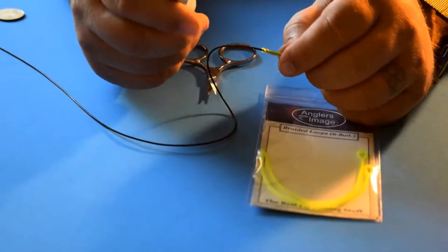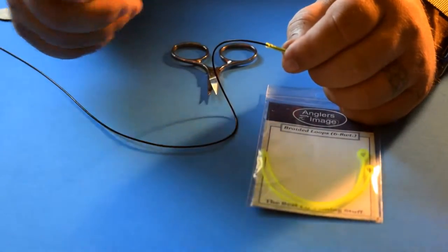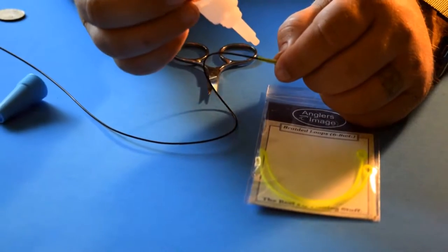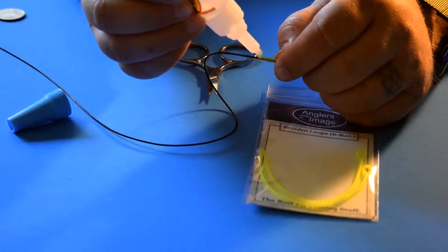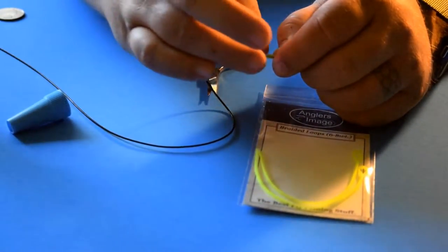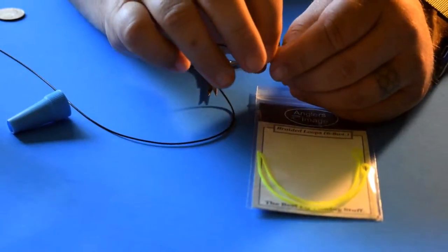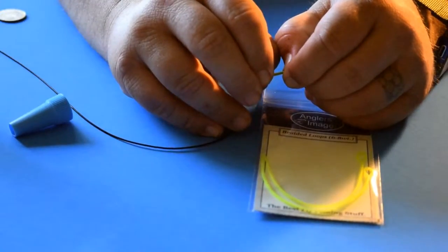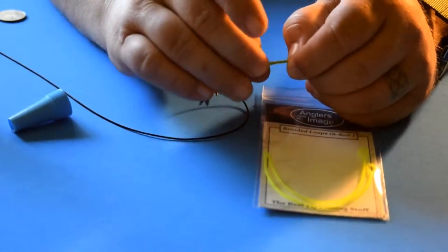So I take just a small little drop of super glue. You can use Zappagap, any gel super glue. Just take the excess off with my finger. And then I slide this right over the edge and I pinch it down.